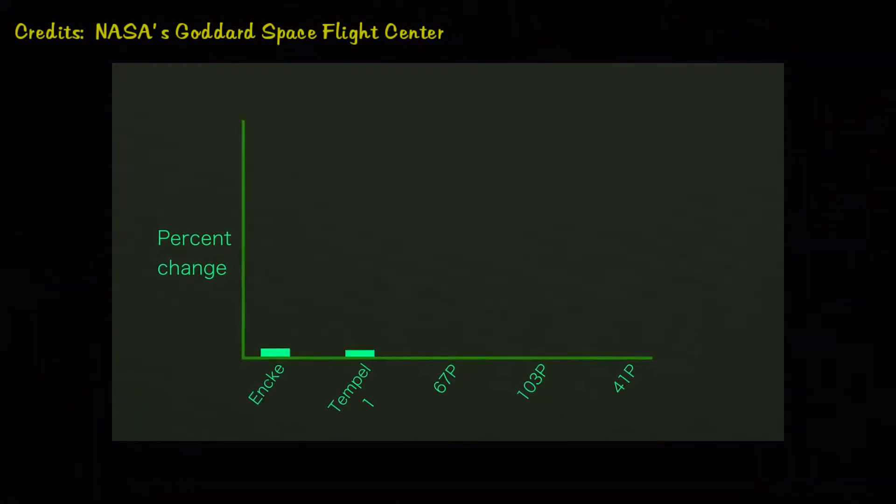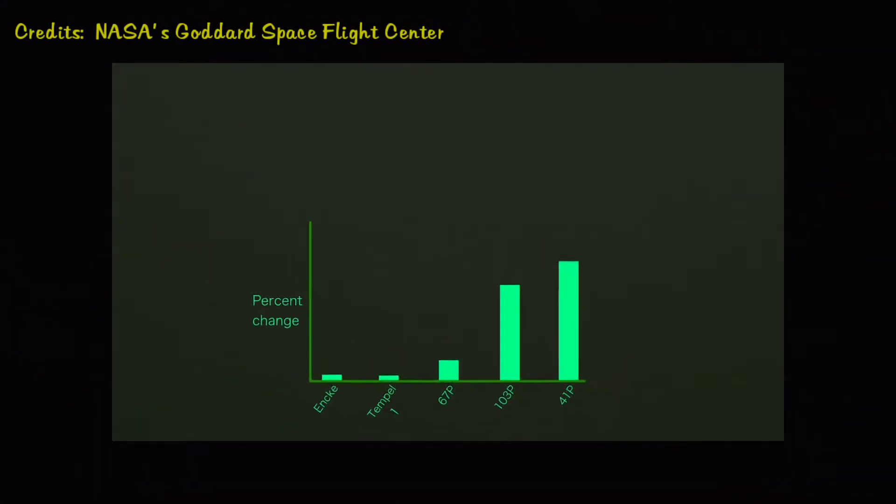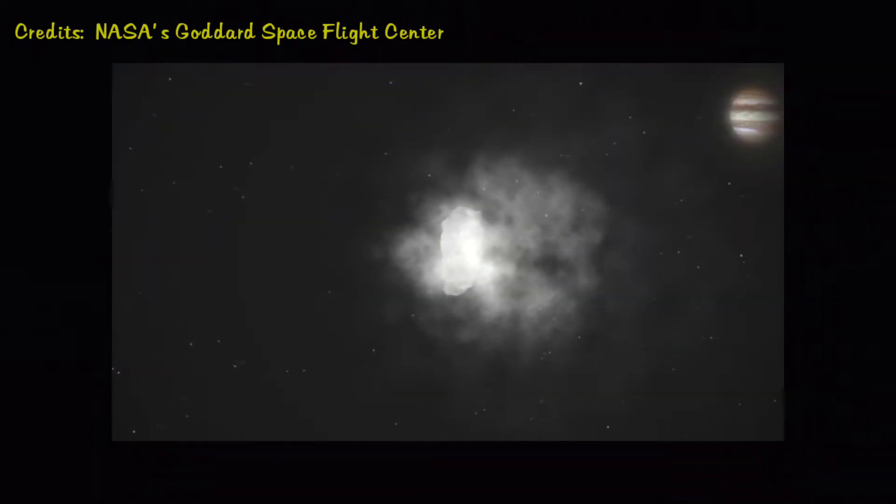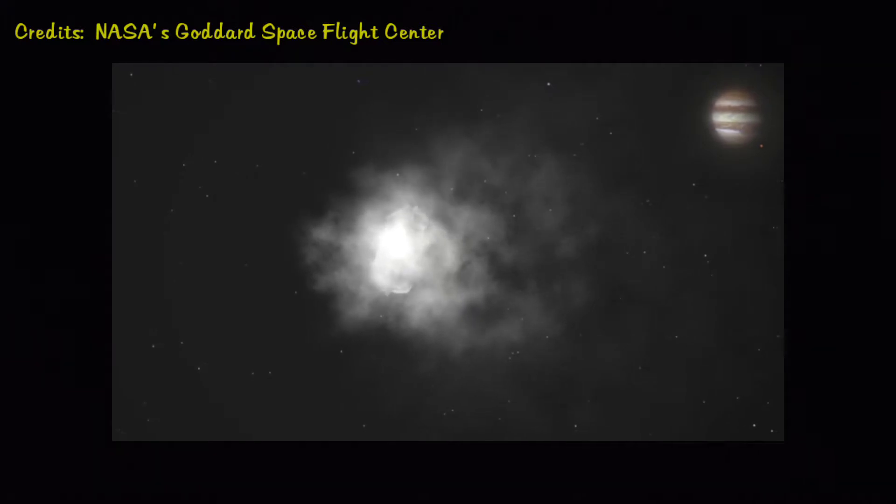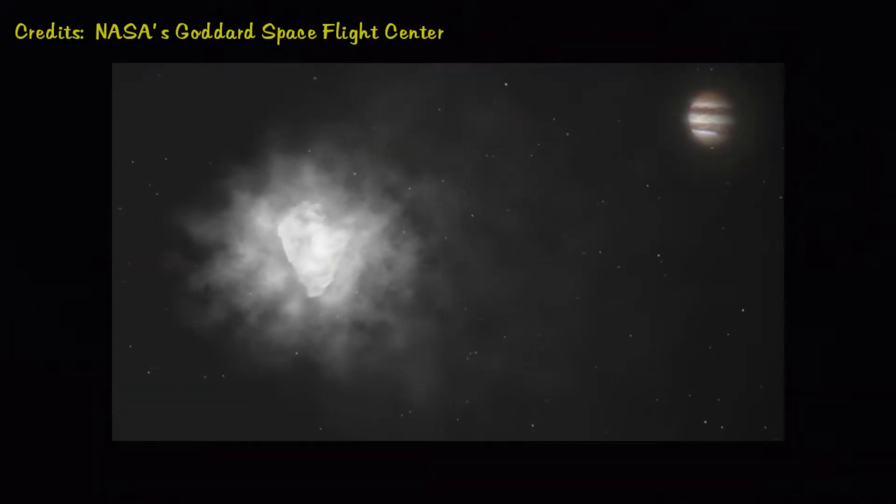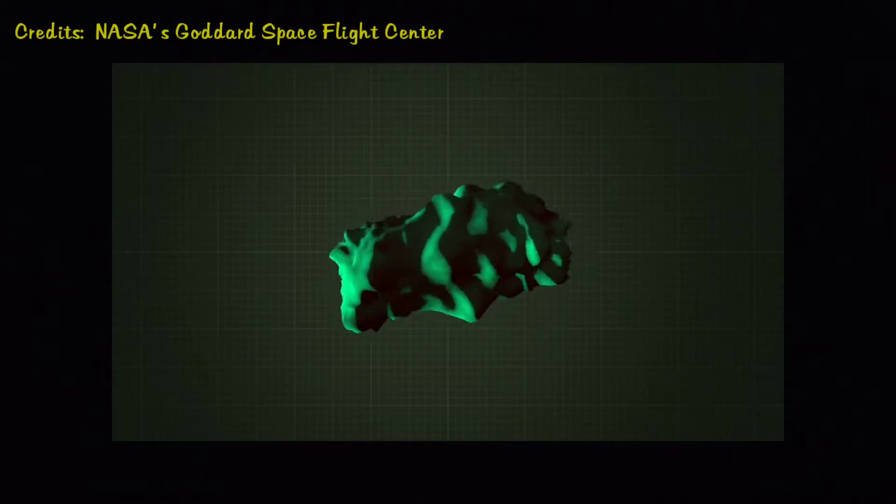This is the most abrupt rotational change ever observed on a comet. 41P is smaller than most of the so-called Jupiter family comets and is very active. So astronomers think a particularly active area produced strong enough jets that aligned just the right way, applying brakes to the comet's spin.